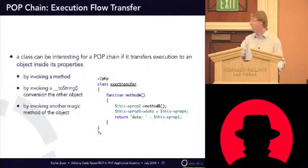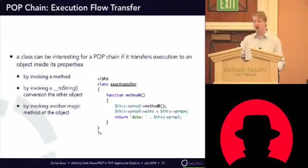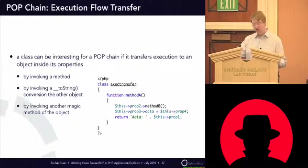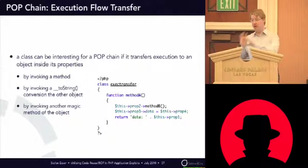But most of the time the destructor will do nothing else than call another method of another object. So you need a way to transfer control from one object to another. The most obvious thing is that you have a property that gets dereferenced and the method of this new object is executed. You see this in the example — property two is used as an object and method B is executed on it. Another way would be that property three is also an object and the data property is assigned some value, so you maybe can hit a magic setter in another object. A third option is a property appended to a string, so you could hit a toString method of another object. This always transfers execution from one object to the other.